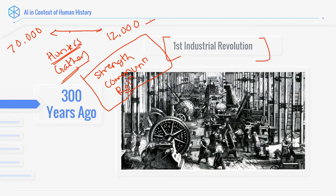Since 12,000 years ago, the agricultural revolution started. When our entire way of life moved from hunter-gatherer to agriculture, we still valued strength and communication. The most amazing thing happened when the first industrial revolution came — it's not our strength which became valuable, but the strength of the machines we create. The industrial revolution kind of removed the limiter on our physical strength; we build machines to do that.